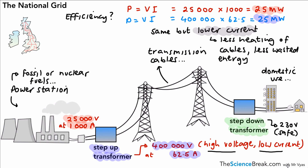The key idea is that we need to have a high voltage at a low current, and the reasons are as described.